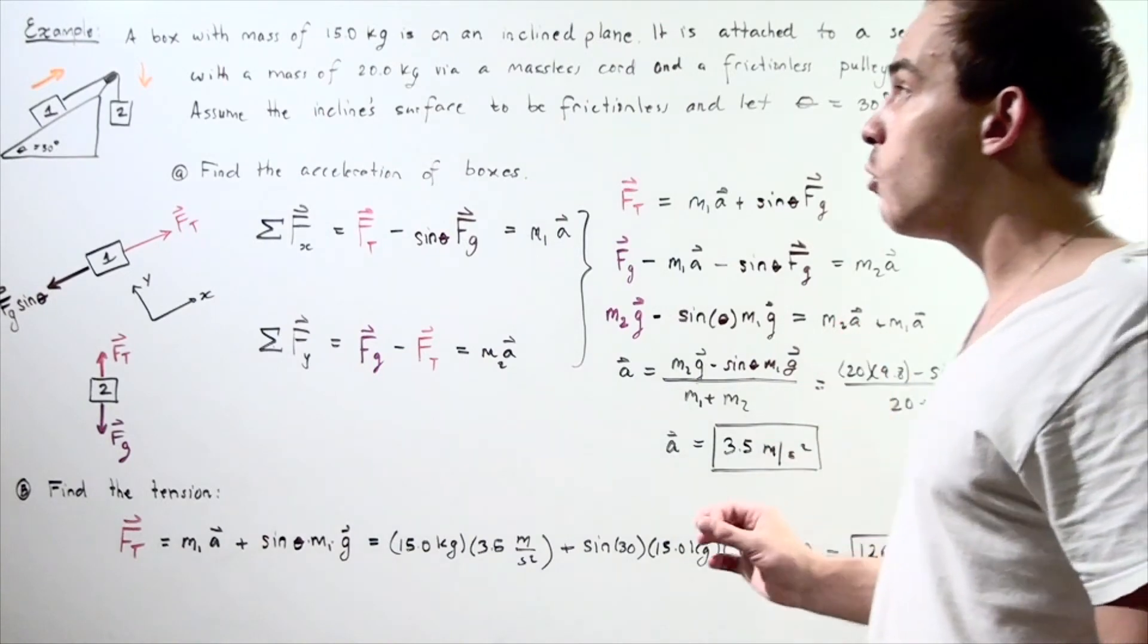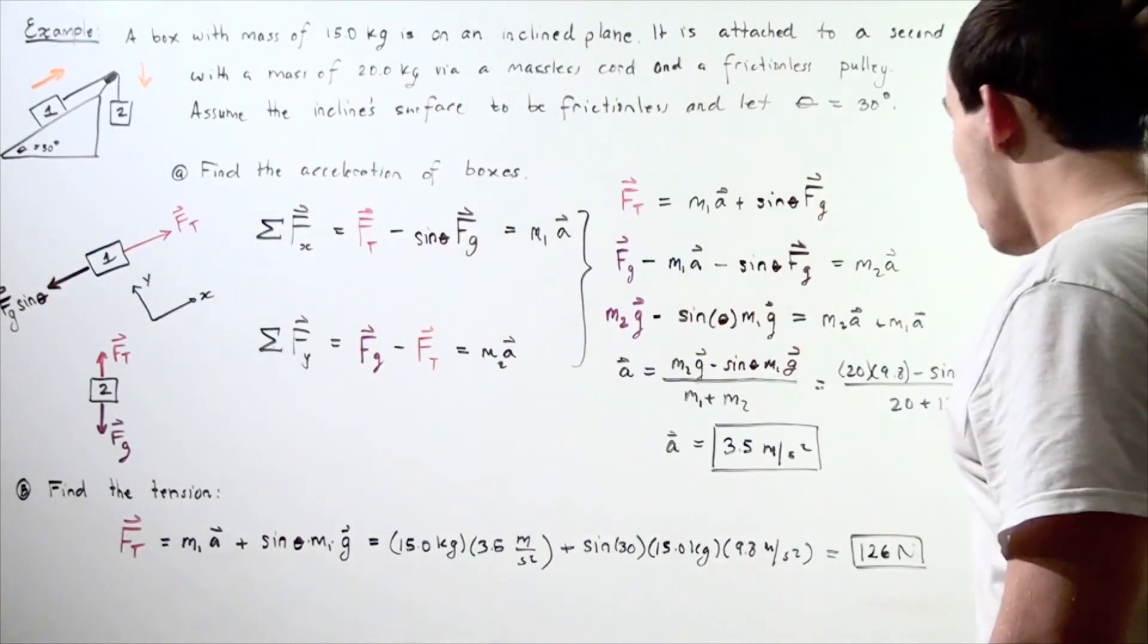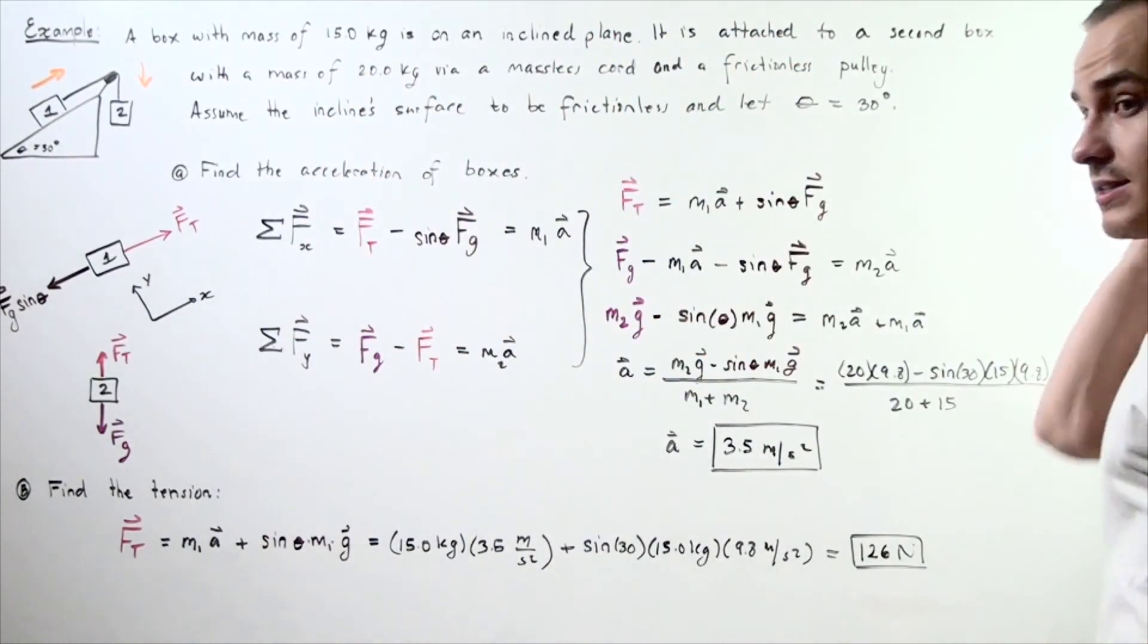Our tension in the rope along any point along the rope is 126 newtons.